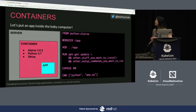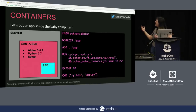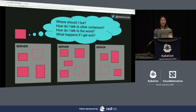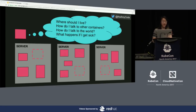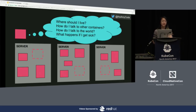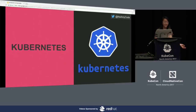After building the container, that's not enough. Our container is going through an existential crisis. It's asking: where should I live? - that's scheduling. How do I talk to other containers? - that's networking. How do I talk to the world? - that's routing. What happens if I get sick? - that's failure recovery. No one really wants to manage all this on their own. We're at KubeCon, so of course - Kubernetes!